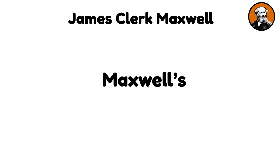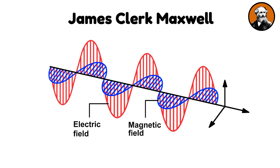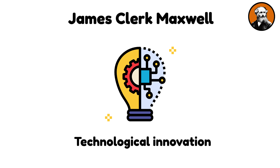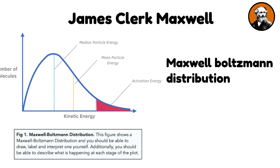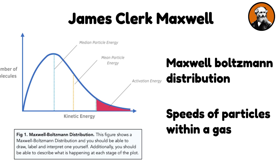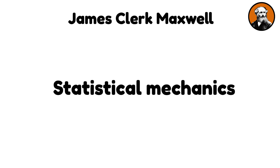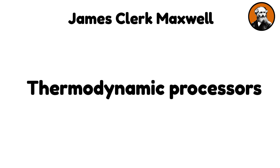His set of equations, known as Maxwell's equations, describe how electric and magnetic fields are generated and altered by each other and by charges and currents. This unification was pivotal in advancing the field of physics and paved the way for numerous technological innovations. Beyond electromagnetism, Maxwell made significant contributions to the kinetic theory of gases. He developed the Maxwell-Boltzmann distribution, which provides a statistical means of describing the speeds of particles within a gas, instrumental in the development of statistical mechanics and deepened the understanding of thermodynamic processes.